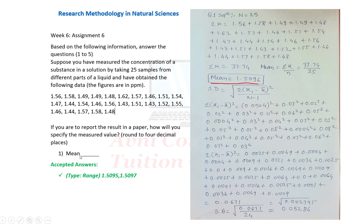First, calculate the mean. The solution is: n = 25, summation of x equals the sum of all sample values. Summation of x = 37.74. Mean = summation of x divided by n = 37.74 divided by 25. Mean = 1.5096.